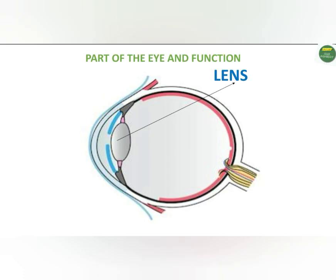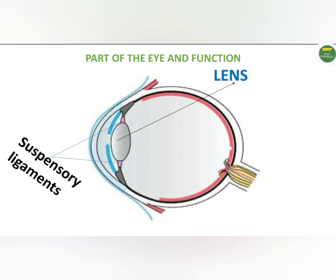The lens of the eye is a biconvex structure held by fibers called suspension ligaments. These suspension ligaments are connected to muscular structures called ciliary muscles or bodies. These ciliary bodies control the shape and focal length of the lens, thereby enabling the lens to focus images properly on the retina.